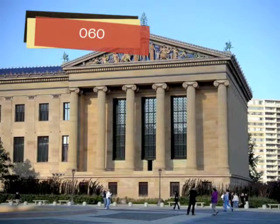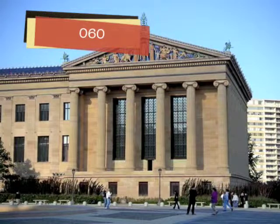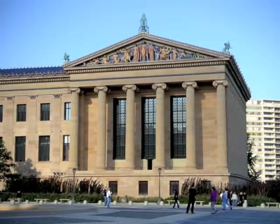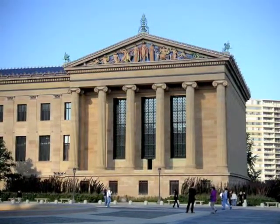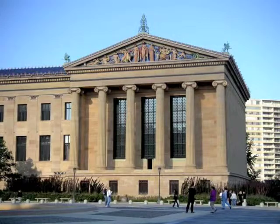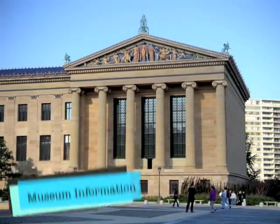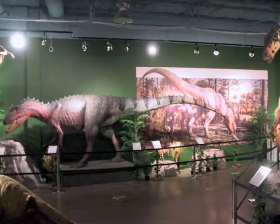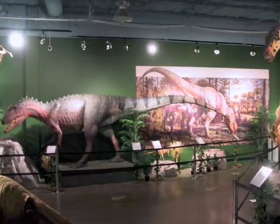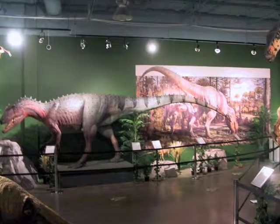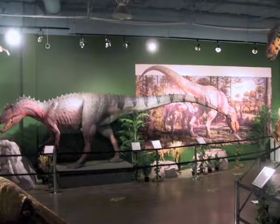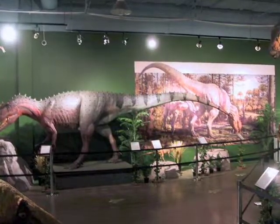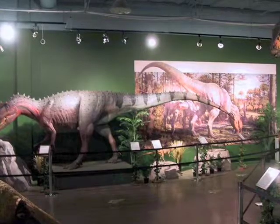Information from museums and information about museums are included in the zero six zero subclass. Dewey included them here because he felt that museums were an important place that people needed to visit so that they could learn what they needed to know.